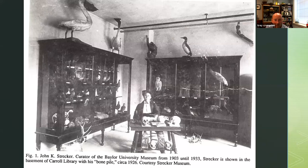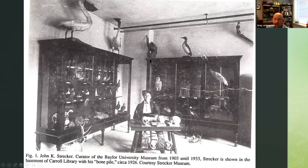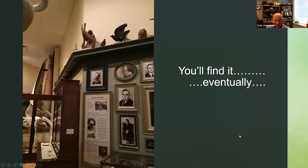You see John Strecker here with his bone pile around 1926. He was the director from 1903 to 1933 and really built the collection in the early part of the 20th century. He is who the museum was named for and who our current exhibit, created in 2004, is named after. Up here you see the sloth — a mother and baby sloth that was stuffed sometime before 1926, around 1910 — and things like that keep reappearing in our exhibits and photographs. See if you can find it currently on exhibit.